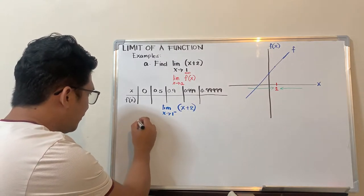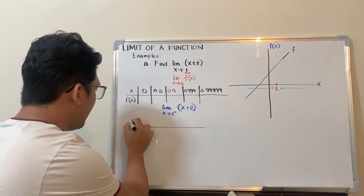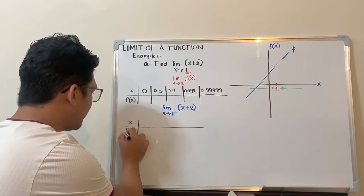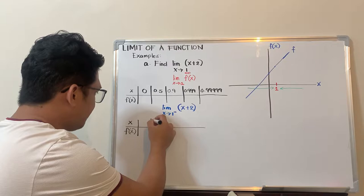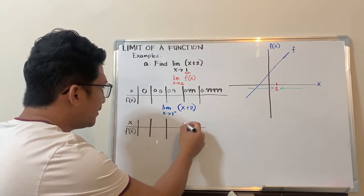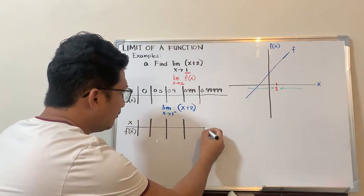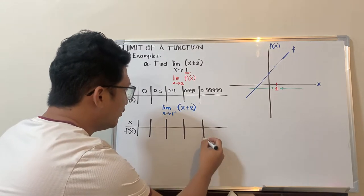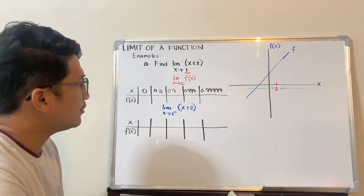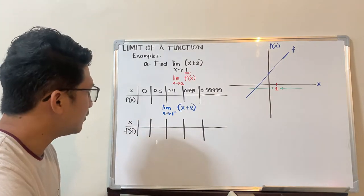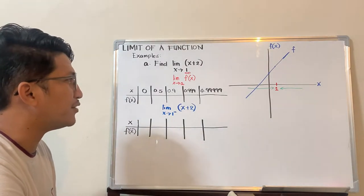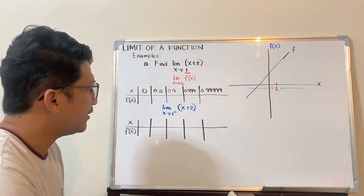Now another table, this time for the right side. We have x and f(x). You can evaluate as many as you want—3, 5, it's up to you. You can start with 3, then 2.